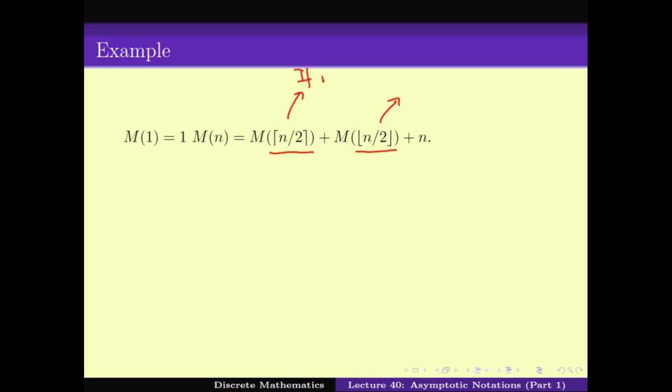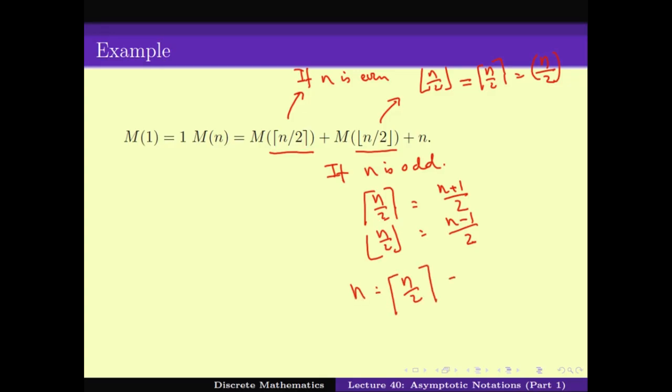So if n is even, then both ⌈n/2⌉ and ⌊n/2⌋ equal n/2. But if n is odd, then ⌈n/2⌉ is actually (n+1)/2 and ⌊n/2⌋ is (n-1)/2, and as you can see, n equals ⌈n/2⌉ + ⌊n/2⌋. Now this is the definition of these two expressions of floor and ceiling.